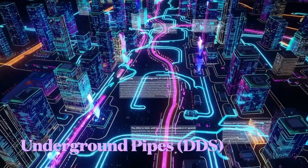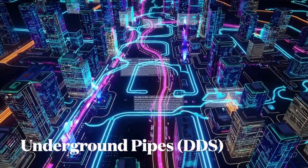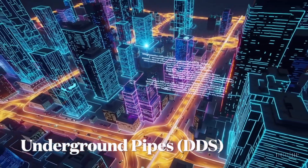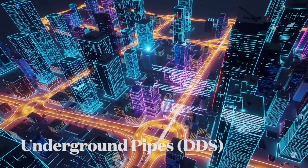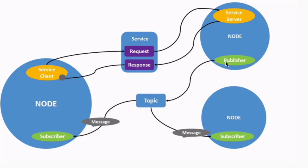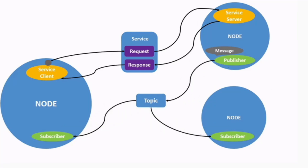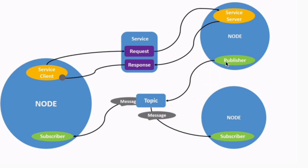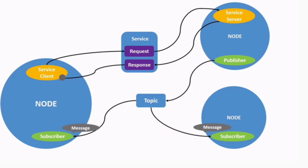But what maintains the integrity of the city? Beneath the surface lies a system of invisible pipelines ensuring that traffic flows reliably. This is DDS — the Data Distribution Service — the middleware upon which ROS 2 is constructed. DDS automatically discovers nodes, manages quality of service parameters such as reliability and latency, and ensures that messages reach their intended destinations. It is the unseen infrastructure that transforms a collection of nodes into a coherent, dependable system.